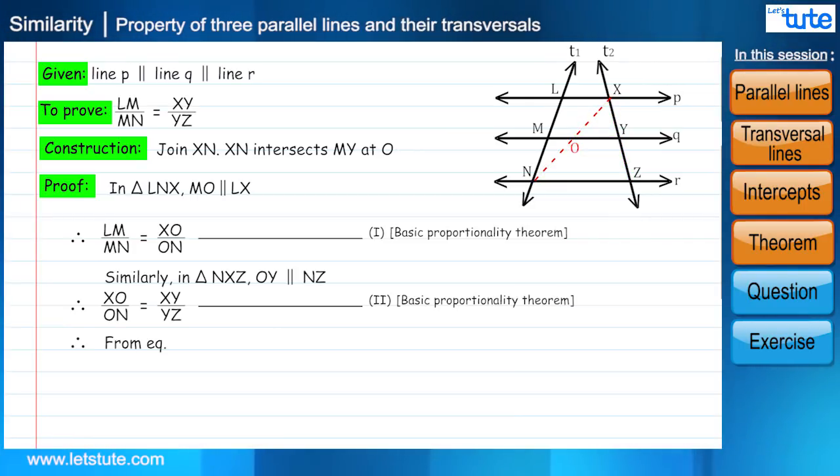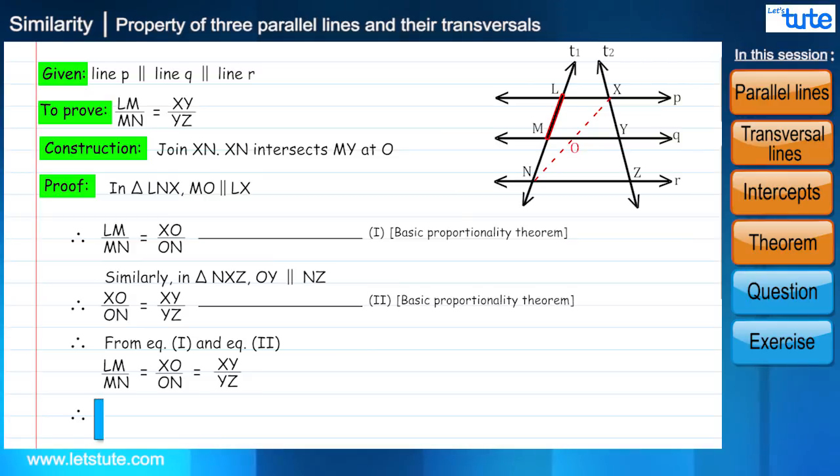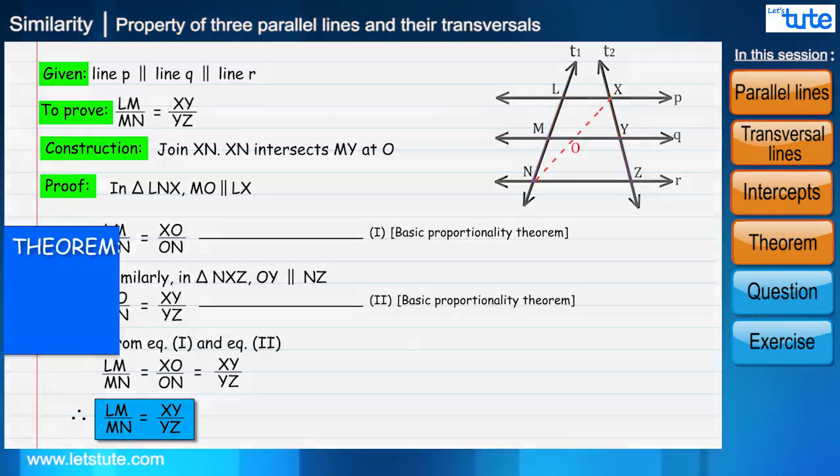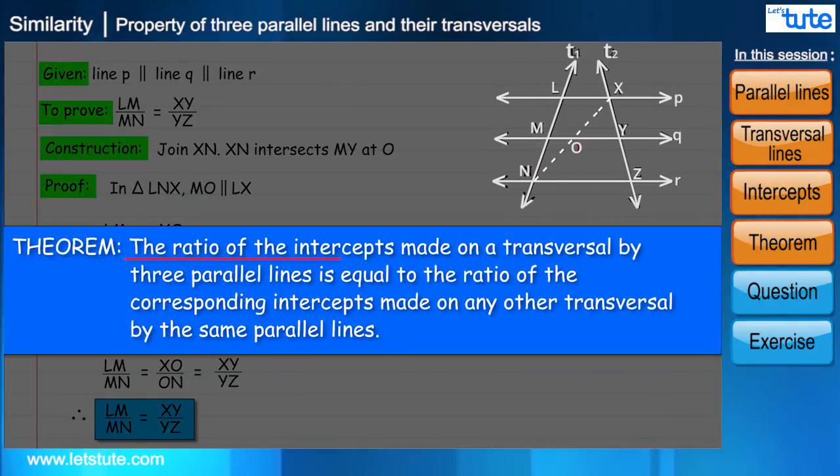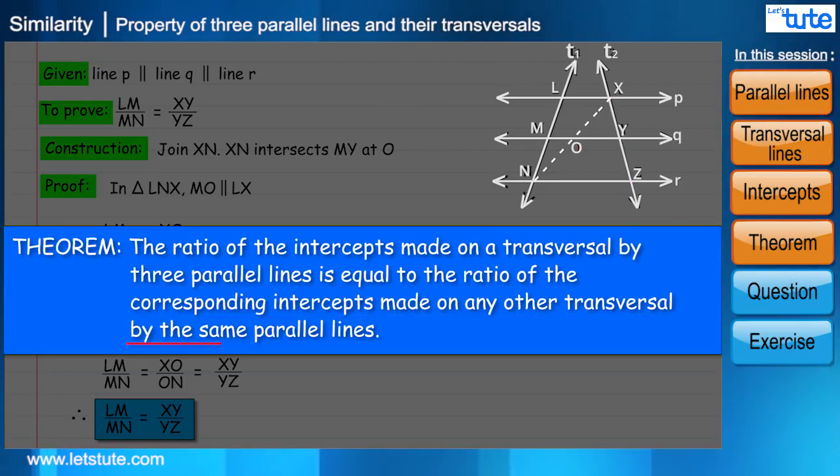Therefore, from equation 1 and 2, LM divided by MN equal to XY divided by YZ. So here we can see that the ratio of the intercepts made on a transversal by three parallel lines is equal to the ratio of the corresponding intercepts made on any other transversal by the same parallel lines.